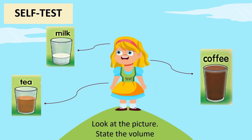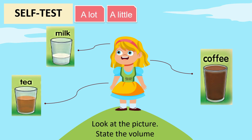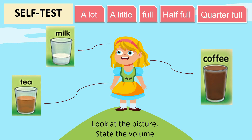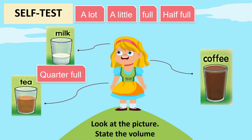Let's do a self-test. Look at the picture and state the volume — a lot, a little, full, half full, or quarter full. Look at the milk. The milk is... yes, quarter full! Now look at the tea.